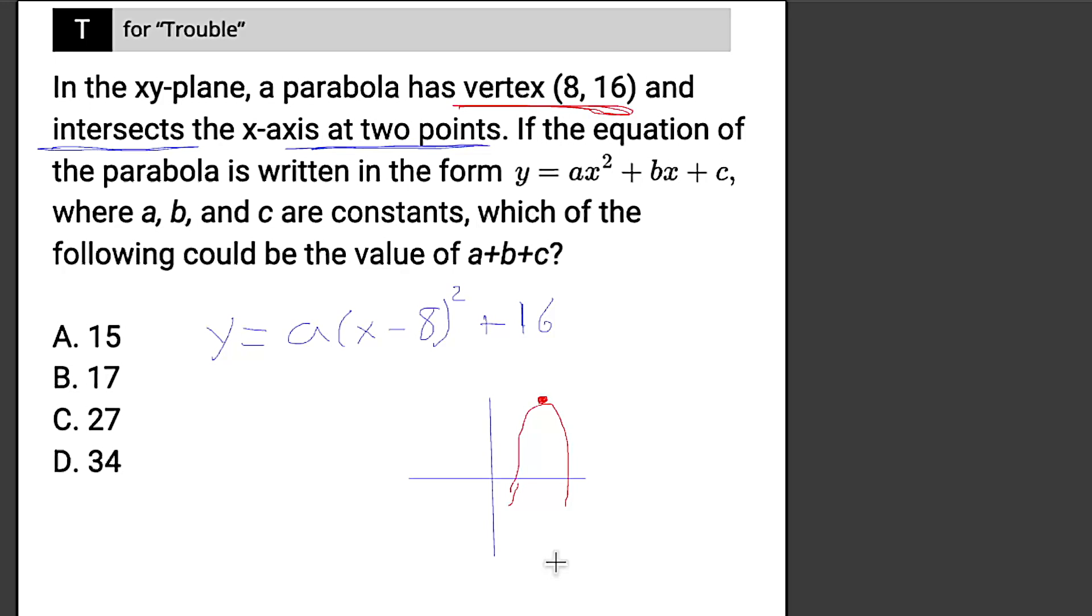The final piece of knowledge that's really helpful to know is that this A determines whether or not you have a right side up or an upside down parabola. If A is negative, you're going to have an upside down, and if A is positive, you're going to have a right side up. So just based off of that, I know that A is going to have to be negative because my vertex is above the x-axis, so I need a negative A value to make an upside down parabola and get these two points of intersection.